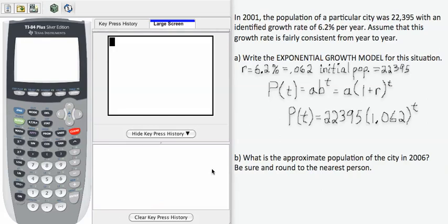If I do that, I get the model P(t) equals 22,395 times 1.062 to the t.